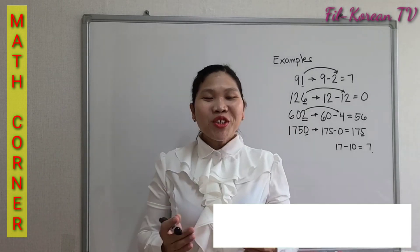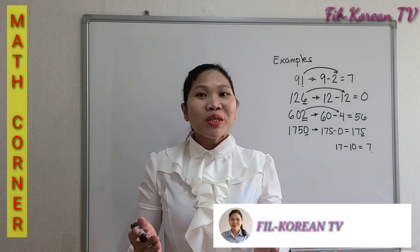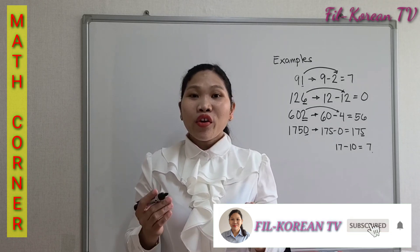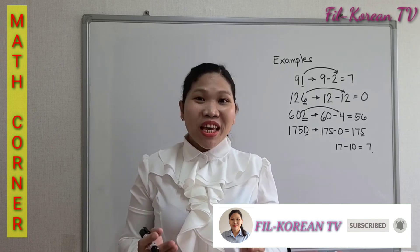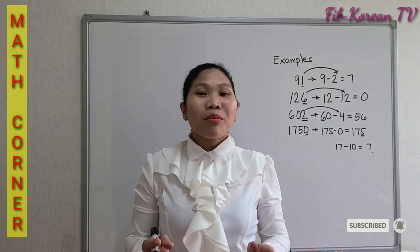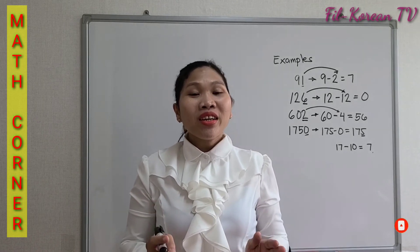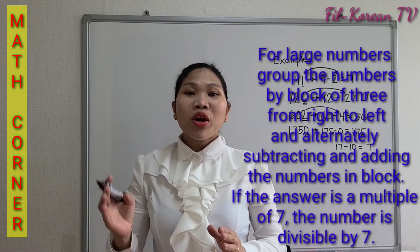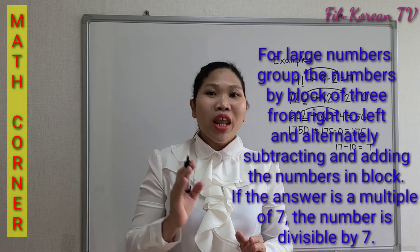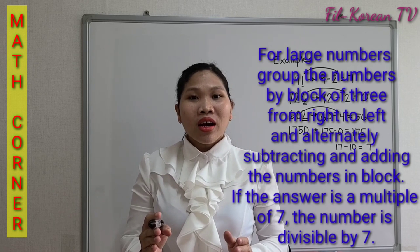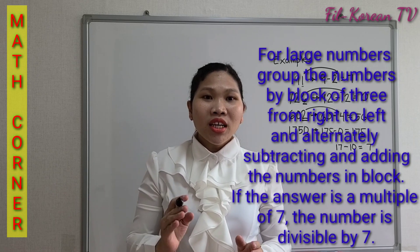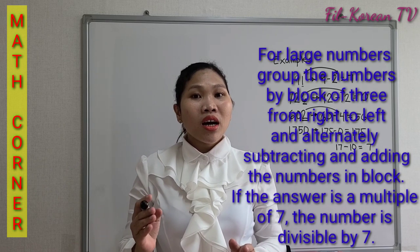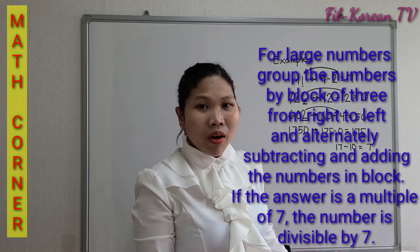For larger numbers, there is a faster way to determine whether a number is divisible by 7. That is by grouping the numbers in blocks of 3 from right to left, and then alternately subtracting and adding the numbers in the blocks.